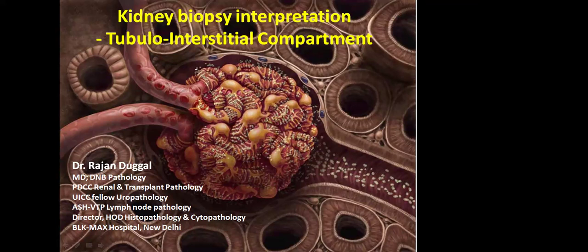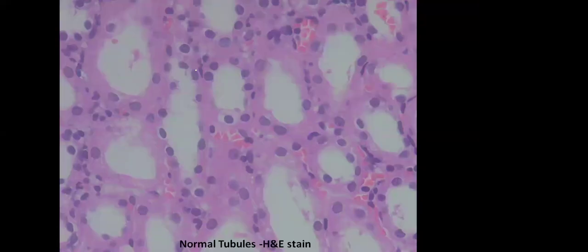Today we are going to discuss kidney biopsy interpretation and I will focus only on the tubular interstitial compartment pathology. As I have discussed before in my classes about the glomerular pathology, today we are going to deal with only the tubular compartment as well as the interstitial compartment. Before we go to the pathology part, let's look at the normal histology.